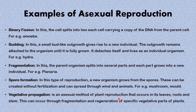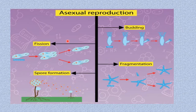Vegetative propagation is an asexual method of plant reproduction that occurs in its leaves, roots, and stem. This can occur through fragmentation and regeneration of specific vegetative parts of plants. Now here is a pictorial representation of asexual reproduction.